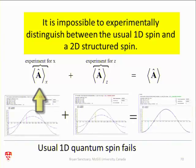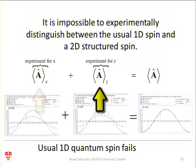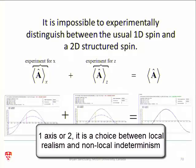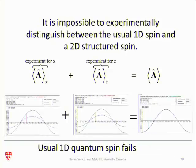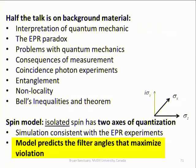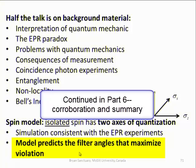If you want one axis of quantization, have one axis of quantization and have non-locality, or if you want two axes of quantization, then you have locality and you have determinism. But there's more. There is evidence here that this two-dimensional spin is right. And the reason for this is the model predicts the filter angles that maximize the violation. One-dimensional spin will not do this.